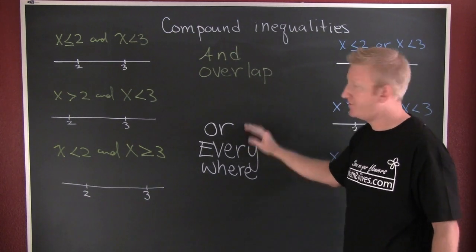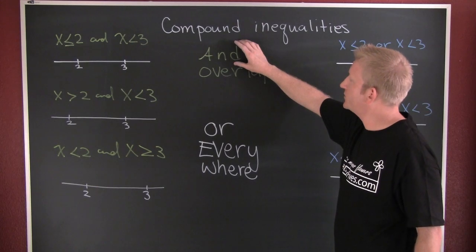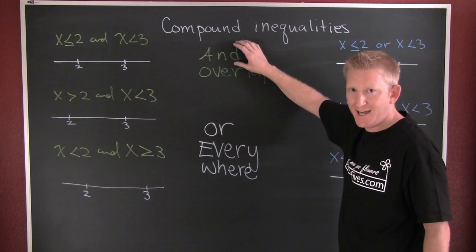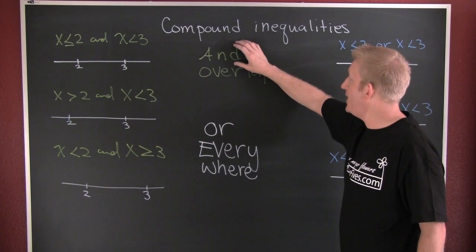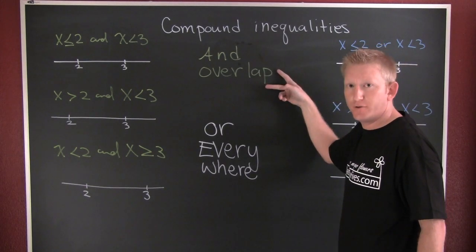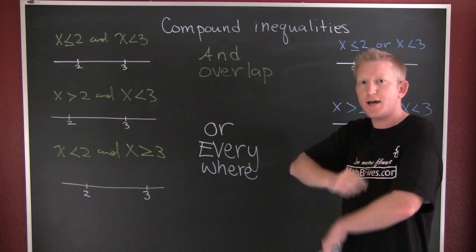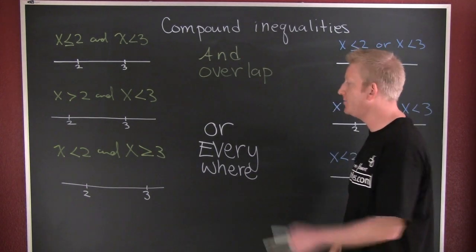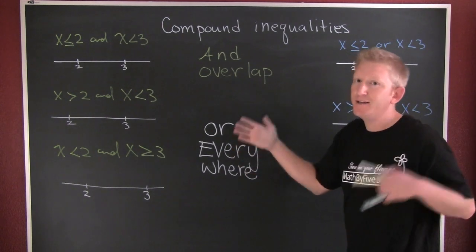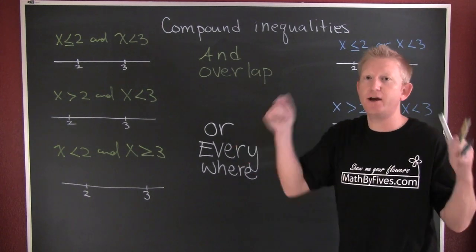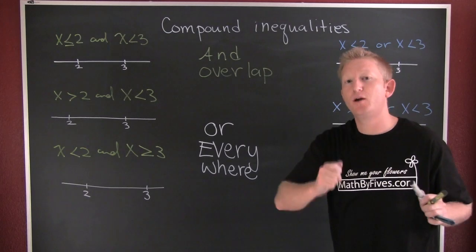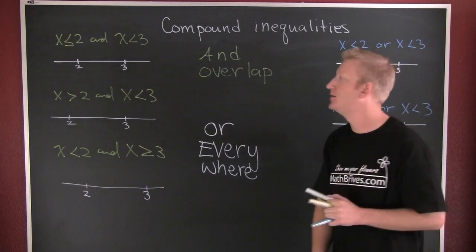On the graph, if the connecting word in your compound inequality is AND, then you're looking for the overlap — where they both exist at the same time. If it's OR, then it's everywhere; you need to write down everywhere where you see shading.